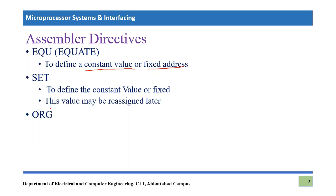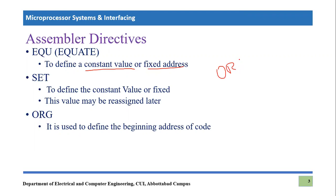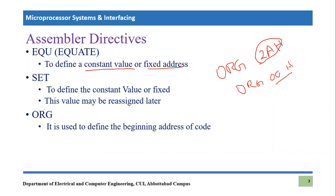Another important assembler directive is ORG, and it is used to define the beginning address of the code. Whenever we write our program, we will write something like ORG 0x2A — we are starting our code at that location. So ORG tells the assembler that the code will be placed starting at this address, for example ORG 0x00 means the code will be placed at address 0x00.